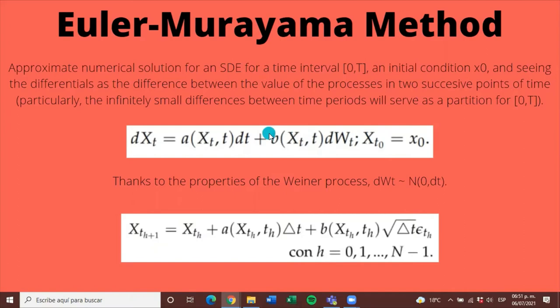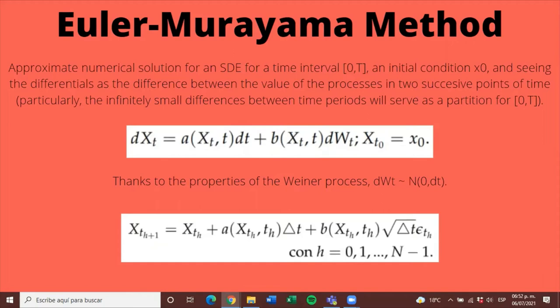Using this formula, it is possible to simulate different trajectories of a given process. We now present the stochastic differential equation of each of the processes we are interested in, and their particular recursive solution: the solution of the Geometric Brownian motion, the solution of the Ornstein-Uhlenbeck model, the solution of the Vasicek model, and the solution of the Cox-Ingersoll-Ross model.